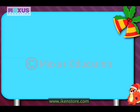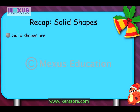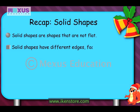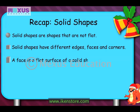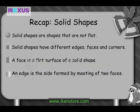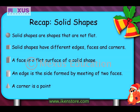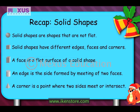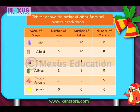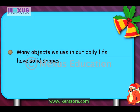Let's quickly go over what we learnt about solid shapes. Solid shapes are shapes that are not flat. Solid shapes have different edges, faces and corners. A face is a flat surface of a solid shape. An edge is the side formed by a meeting of two faces. A corner is a point where two sides meet or intersect. This table shows the number of edges, faces and corners in each shape. Many objects we use in our daily life have solid shapes.